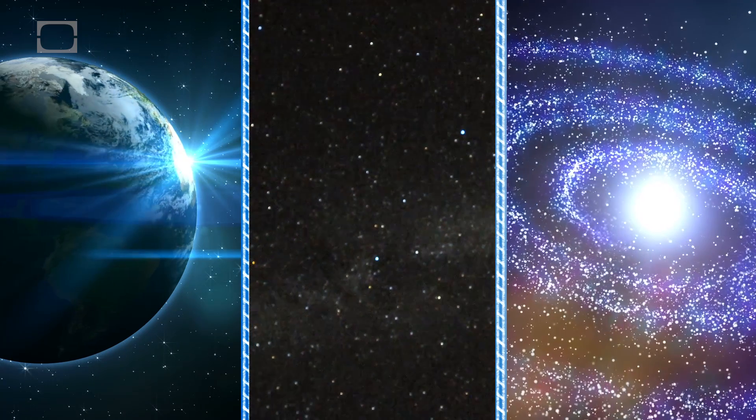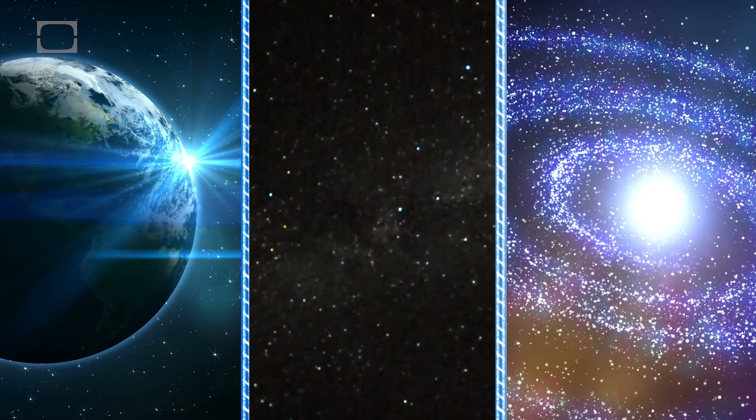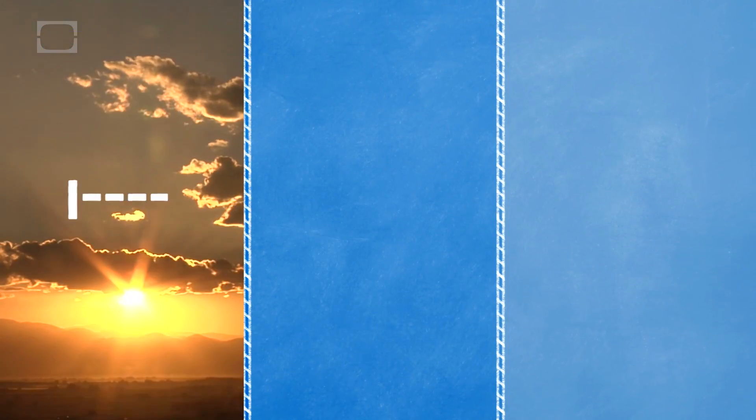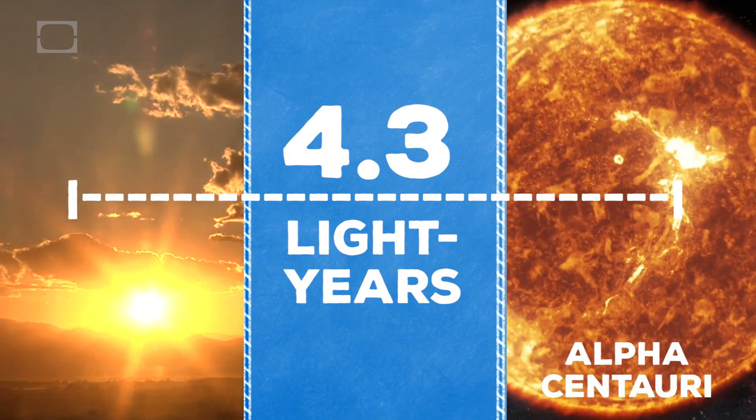Astronomers use light years to measure how far away planets, stars, and galaxies are. For instance, after the sun, the next closest star is 4.3 light years away.